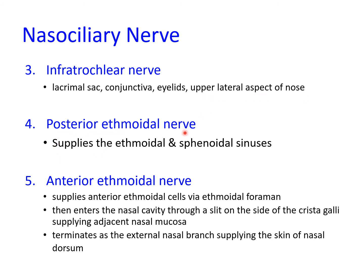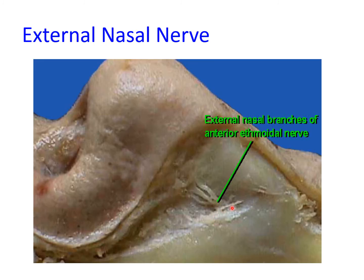The posterior ethmoidal nerve provides innervation to the ethmoidal and sphenoidal air sinuses. The anterior ethmoidal nerve supplies the anterior ethmoidal cells via the ethmoidal foramen, then enters the nasal cavity through a slit on the side of the crista galli, supplying the adjacent nasal mucosa in the upper third of the nasal cavity, and finally terminates as the external nasal branch, supplying the skin of the nasal dorsum.